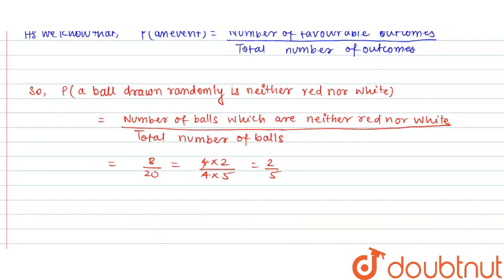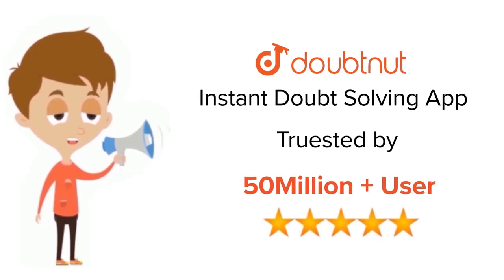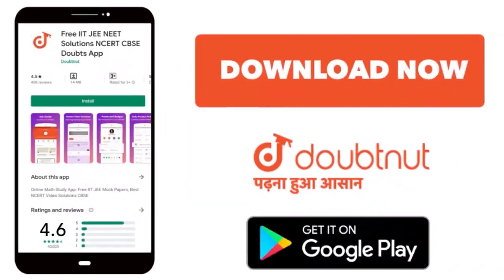Hence, the required probability is 2/5. I hope the solution was clear. Thank you! For class 6-12, JEE, and NEET level, trusted by more than 5 crore students, download Doubtnet app today.